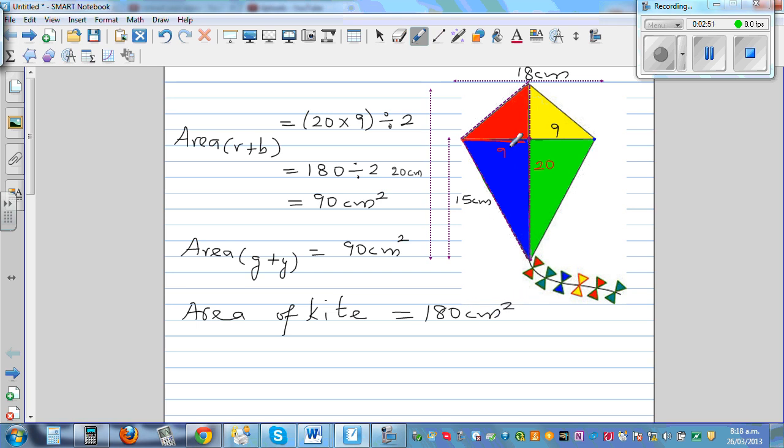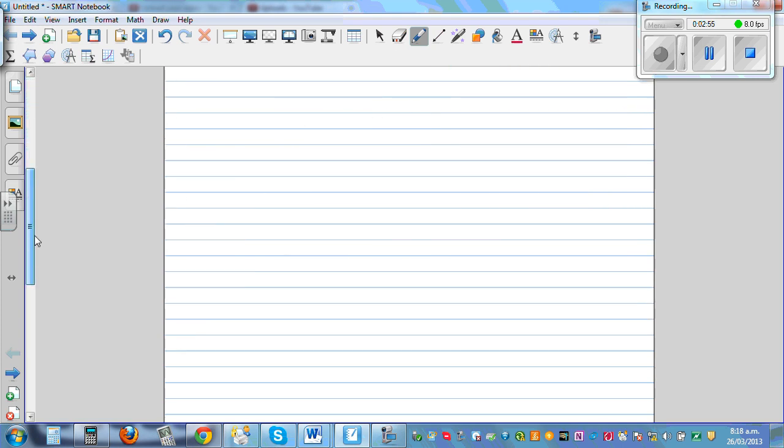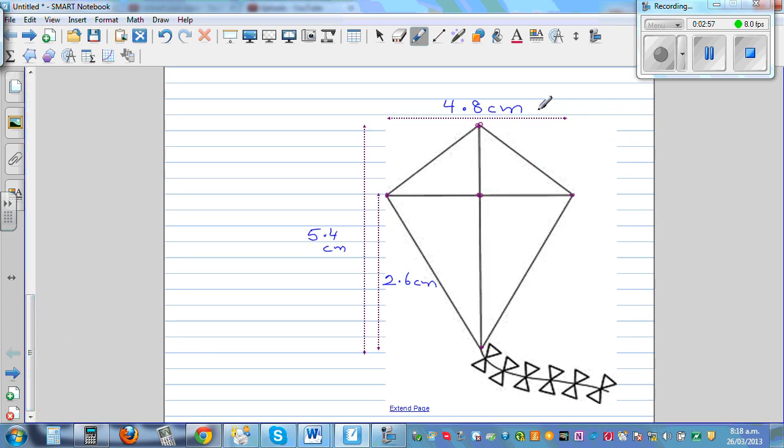You can also divide this into 4 triangles and add them. You'll get the same answer. I want you to do this example yourself. The horizontal distance is 4.8, the vertical distance is 5.4. Basically, if you know this and this, you can find the area of the kite.